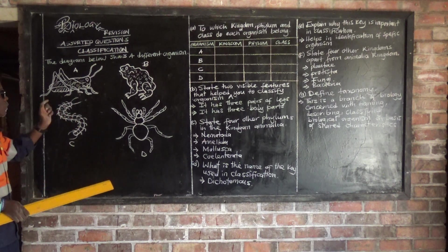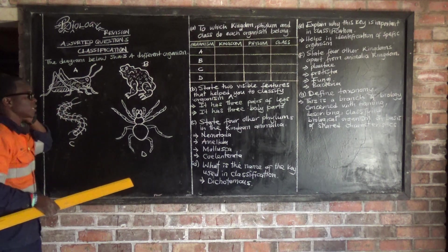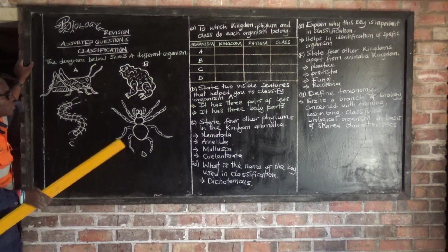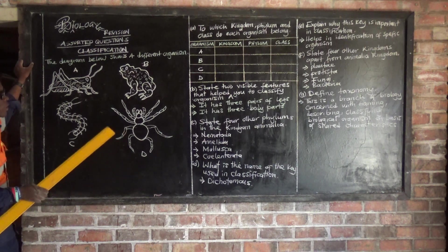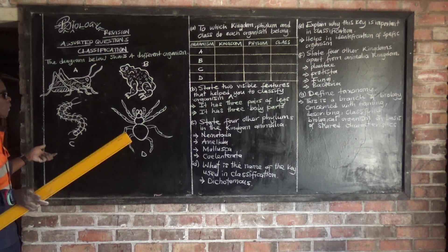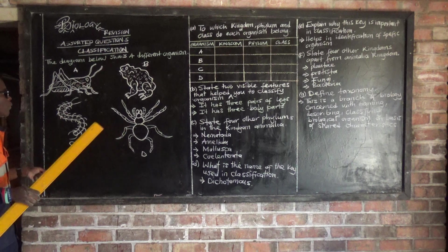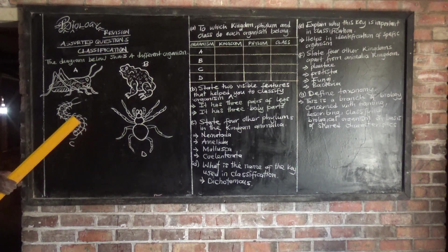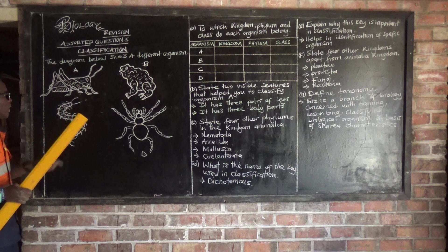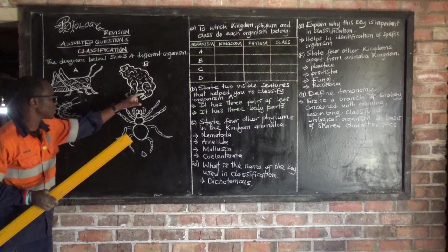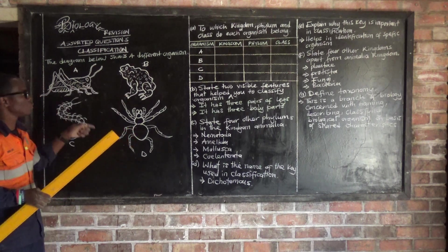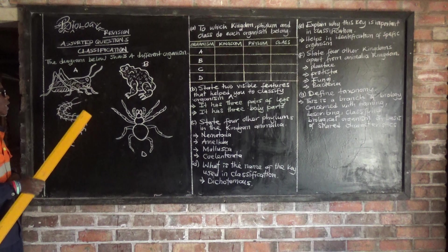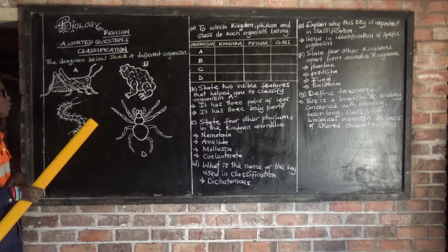We know what classification is. Classification is simply the putting of organisms into groups. So now they want us to classify these organisms according to the kingdom, the phylum, and the class to which each organism belongs.